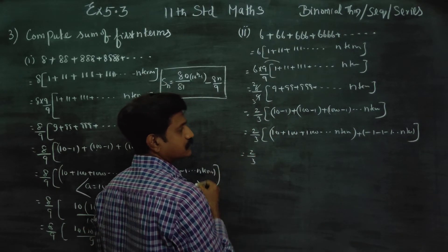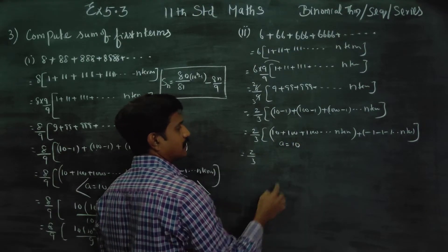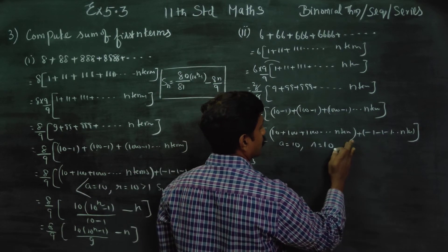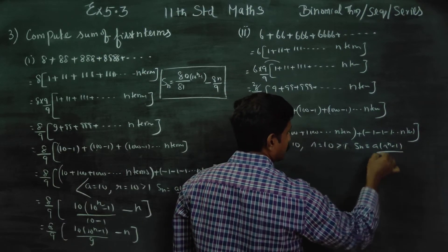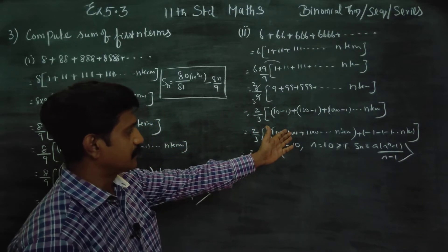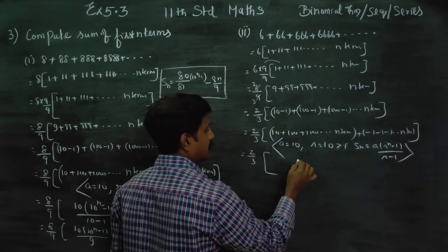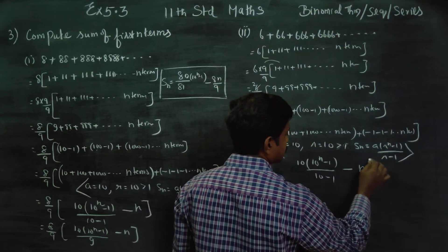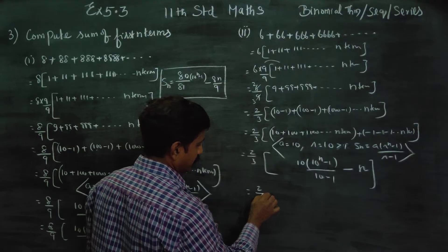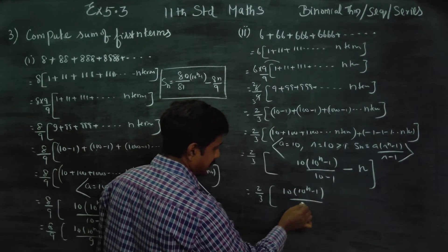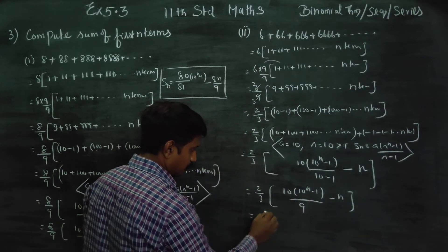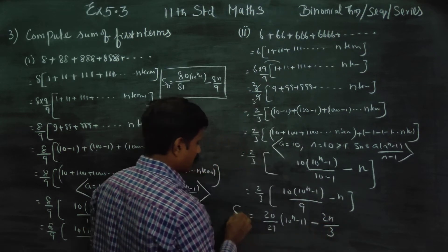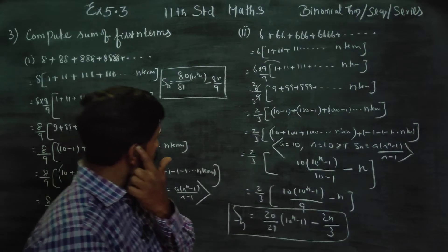Then 2 by 3: this is our GP, where a is equal to 10 and r is equal to 10. Since r is greater than 1, the SN formula is A into R power N minus 1 by R minus 1. Substituting: 2 by 3 times 10 into 10 power N minus 1 divided by 10 minus 1, minus N terms. Final result: 10 power N minus 1 minus 2N by 3, which is your final summation answer.